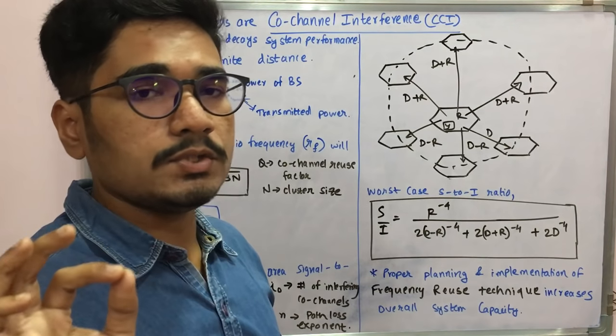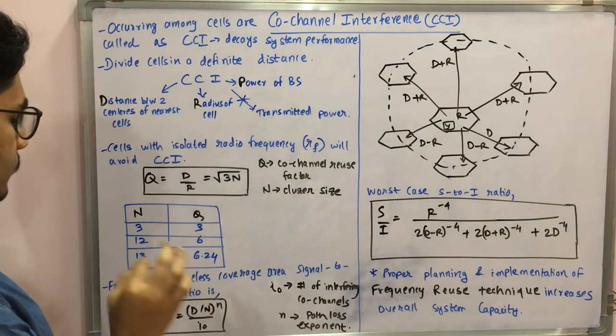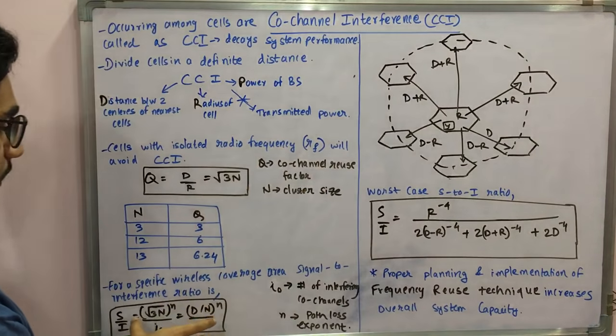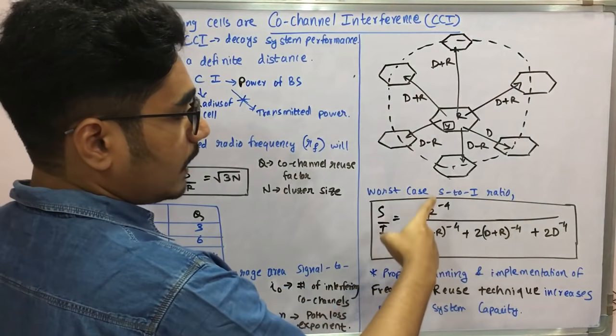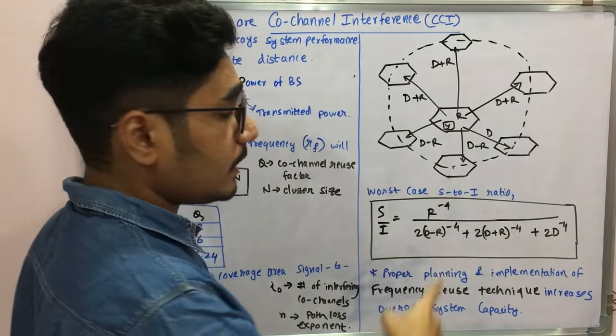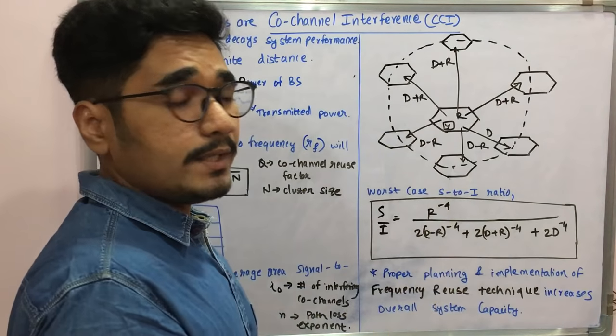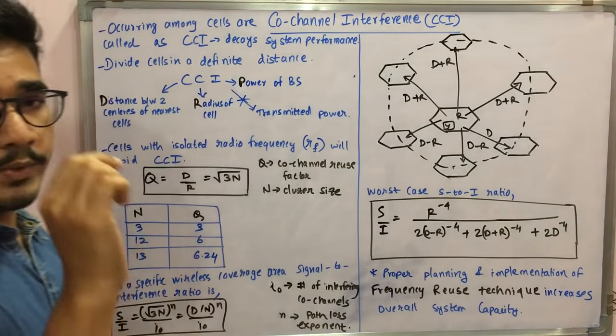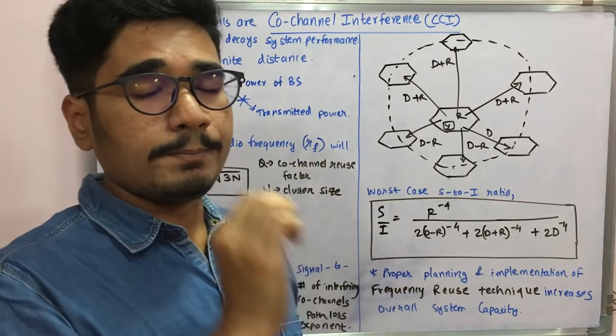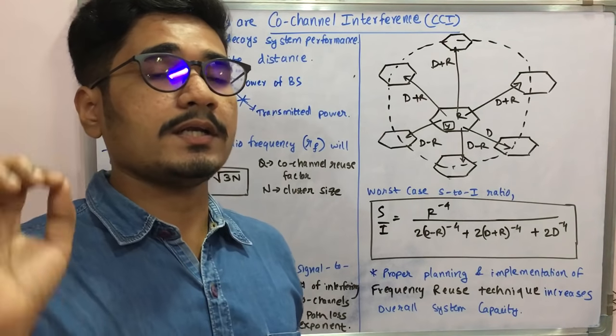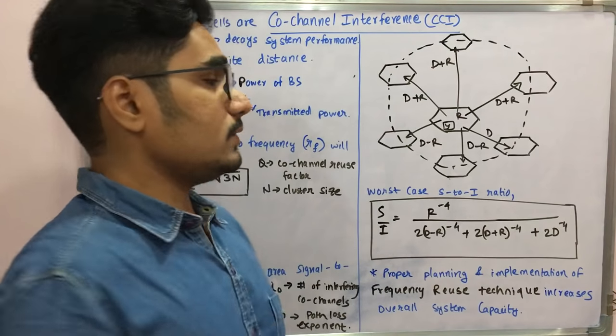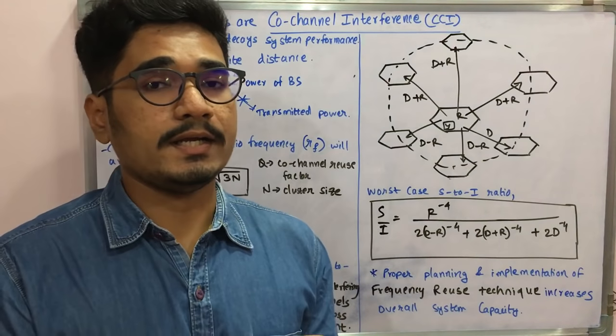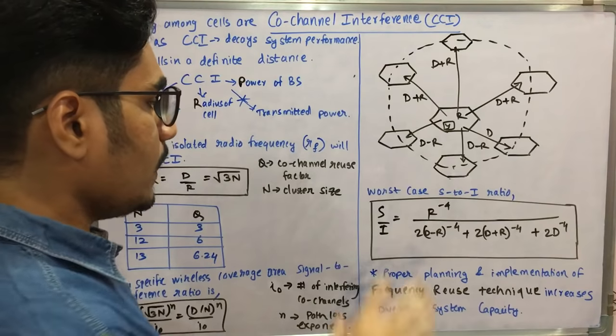In this case let's say a path loss happens and it's represented by a value of n equals to 4. Then what you can have is the signal to interference ratio in the worst case is given by substituting this value. Here you get r to the minus 4 divided by 2 into d minus r to the minus 4 plus 2 into d plus r to the minus 4 plus 2d raised to minus 4. This is the worst case signal to interference ratio if you get a path loss exponent as n equals to 4. If it goes beyond that, then your co-channel interference will just go worse and it will destroy your entire cell or entire network.